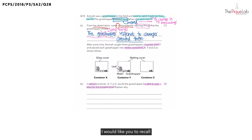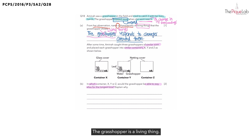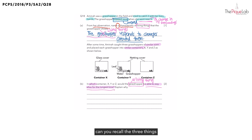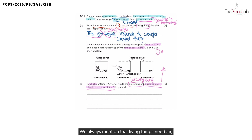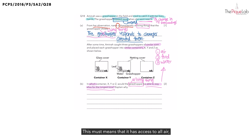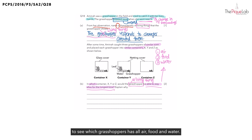Before looking at the diagrams, I would like you to recall: if we talk about the grasshopper staying alive, what does this tell you about the grasshopper? Is it a living thing or a non-living thing? The grasshopper is a living thing. And in order for a living thing to stay alive for the longest time, can you recall the three things that it needs to stay alive? We always mention that living things need air, food and water to stay alive. So in one of the containers, the grasshopper can stay alive for the longest time, which means it has access to all of air, food and water.